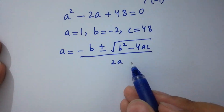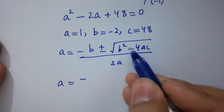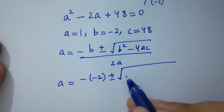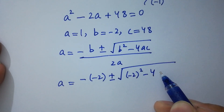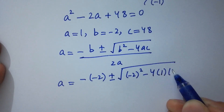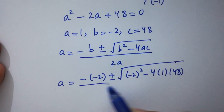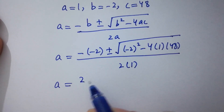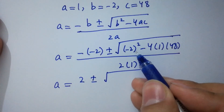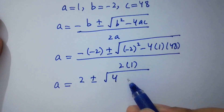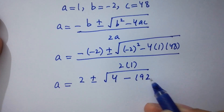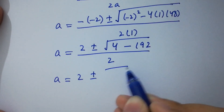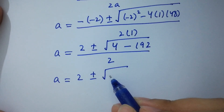Put the values of a, b, and c. We have: a equal to minus (minus 2) plus or minus square root of (minus 2) square minus 4 times 1 times 48, over 2 times 1. This gives: 2 plus or minus square root of 4 minus 192 over 2, which equals 2 plus or minus square root of minus 188 over 2.